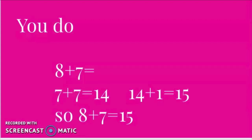Yep, so that small number was seven, so seven and seven makes fourteen, and then add one more to fourteen, and that makes fifteen. So your answer for eight plus seven is fifteen.